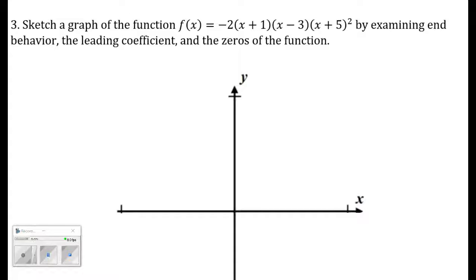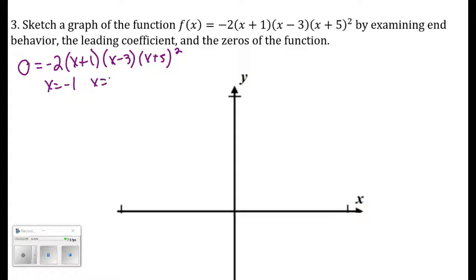Number three: sketch a graph by examining end behavior, leading coefficient, and zeros. The function is already in factored form, so I find when it equals zero: zeros at x equals negative 1, x equals 3, and x equals negative 5. But x equals negative 5 has multiplicity 2 — it's a repeated root. The zeros at negative 1 and 3 have multiplicities of 1.